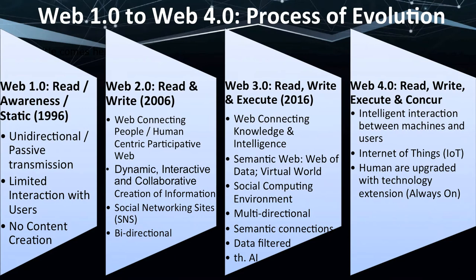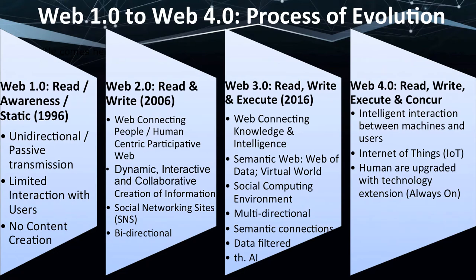Web 1.0 is a read-only or awareness website where people loaded their content, profiles, and business products — essentially an advertising repository. There was limited user interaction, almost no user-generated content, and it was essentially unidirectional or passive. Web 2.0, starting around 2006, can be described as a read-and-write, bidirectional web. People were both loading and accessing content. It was a connecting web — connecting people to people — centric to participation, dynamic, interactive, and collaborative. Social networking sites were key platforms for uploading content.